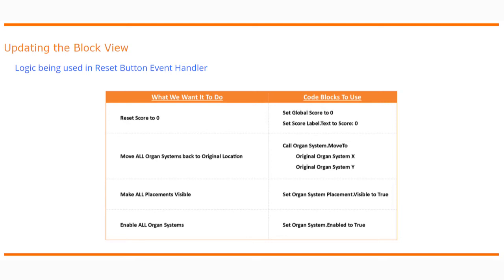Now that the user interface is complete, let's look at the block view logic for the reset event handler. We need to reset the score back to zero by setting the global score variable to zero and setting the score label's text to show 'Score: 0'. We'll also call all organ systems to move back to their original XY coordinates, set all placements visible to true, and set all organ systems enabled to true.